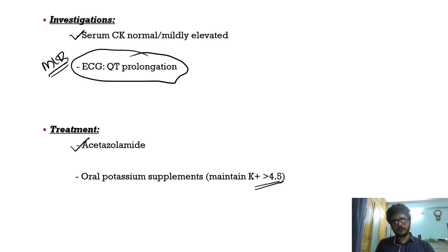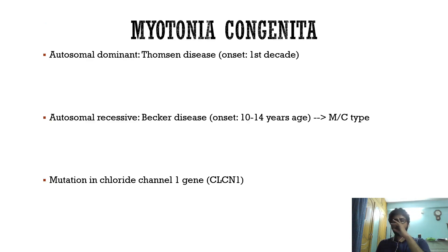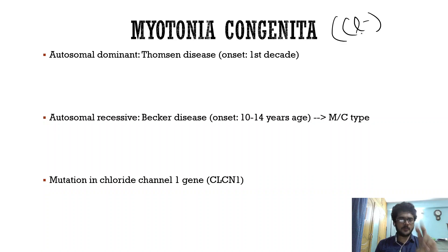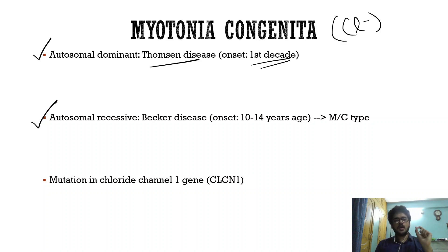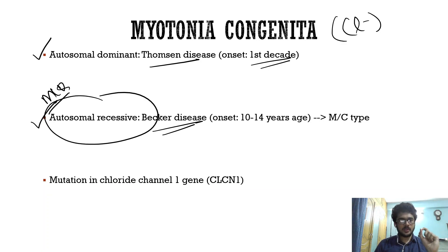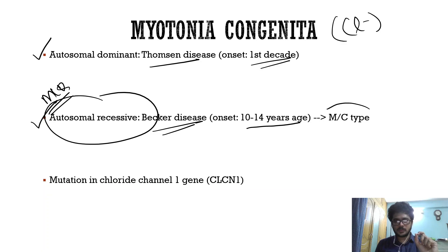Try to maintain potassium above 4.5 with oral potassium supplements. Now let's discuss chloride channelopathies, that is myotonia congenita. There are two forms: the autosomal dominant form — Thomsen disease — usually occurring in the first decade; and the autosomal recessive form — Becker disease — usually occurring at 10 to 14 years of age. Even though Becker disease is autosomal recessive, it is the most common type of myotonia congenita.